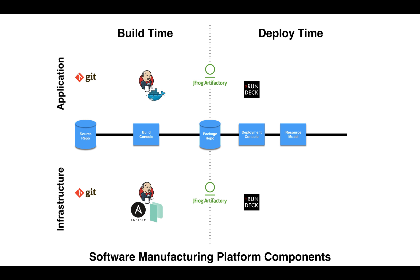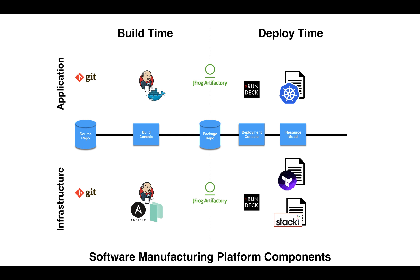The fifth component is the resource model — the thing you use to describe the environment where your artifact will live. For the infrastructure layer, we use stacky pallets and carts on bare metal, and Terraform config files for virtual infrastructure. For the application layer, we're using Kubernetes manifests. The final component is the resource manager, which consumes the resource model along with the builds produced at build time to produce a live application or service. For the infrastructure layer, we use AWS or vSphere for virtual infrastructure, and stacky for bare metal. For the application layer, that's Kubernetes.